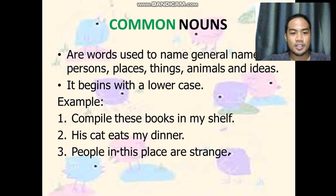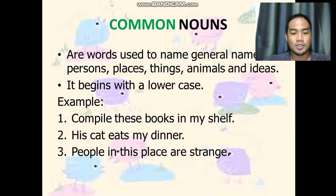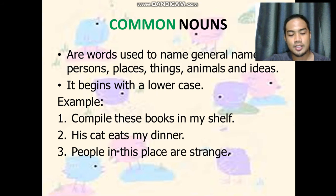Common nouns are words that are used to name general names of persons, places, things, animals, and ideas. It begins with a lowercase — or small letter — unlike proper nouns which begin with a capital letter. For example: 'Compile these books in my shelf.' The common noun is books. 'His cat eats my dinner.' The common noun is cat. 'People in this place are strange.' The common noun is place.